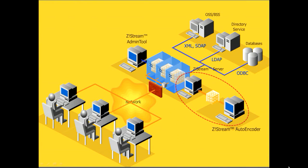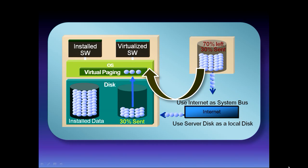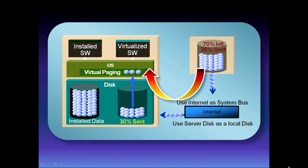Going back to the configuration diagram: the software is compressed and encoded into a single pack. Think of the bubbles in the box as data blocks of the original software — this box is stored in the server. When the end user clicks the icon in the web desktop module, Zstream streams the bubbles required for initial loading. As the user works, for example using the drawing tool in Microsoft Word, that portion of the bubbles is streamed on demand. This is our innovative on-demand-based application streaming.